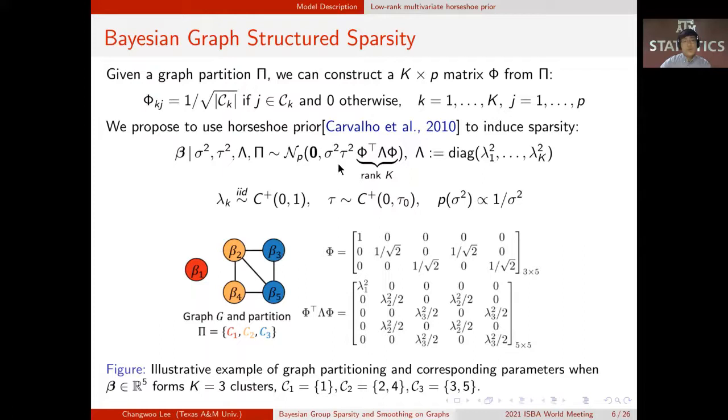So we propose to use following prior to induce sparsity. Similar to the horseshoe, it has same half Cauchy prior on the scale parameters, but the covariance term now is not diagonal anymore, but has a low rank structure. Below shows an example of covariance term phi transpose lambda phi when we have three clusters, 1, 2, 4, and 3, 5.